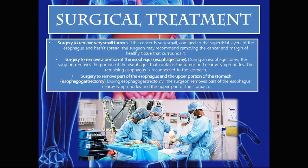Treatment for esophageal cancer — surgical approaches: Option 1 is surgery to remove very small tumors. If the cancer is very small, confined to the superficial layers, and hasn't spread, the surgeon may recommend removing the cancer along with a margin of healthy surrounding tissue. Option 2 is esophagectomy — surgery to remove a portion of the esophagus. During an esophagectomy, the surgeon removes the portion of the esophagus containing the tumor and nearby lymph nodes, and the remaining esophagus is reconnected to the stomach.